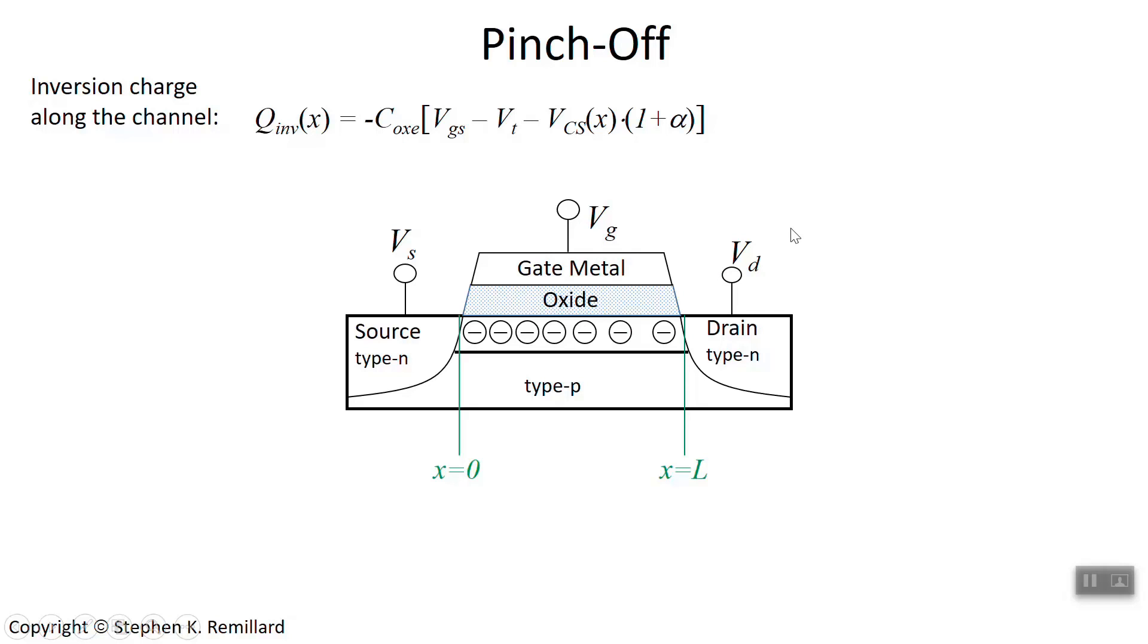Let's put ourselves in the channel over here by the drain, and let's look at what it's like there when you arrive at saturation. V sub drain, V sub ds, equals V sub dsat, the saturation voltage. The inversion charge density has gotten lower and lower, and when you arrive at saturation, because Vds equals Vdsat,